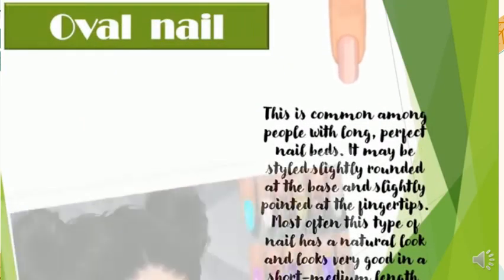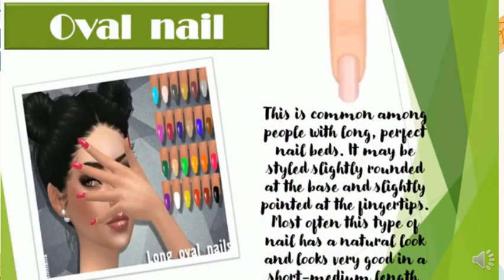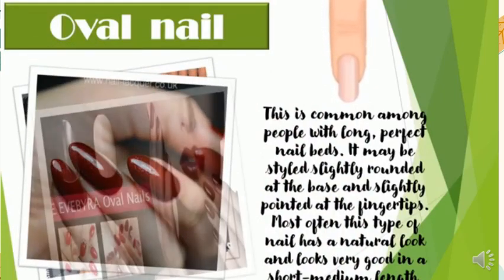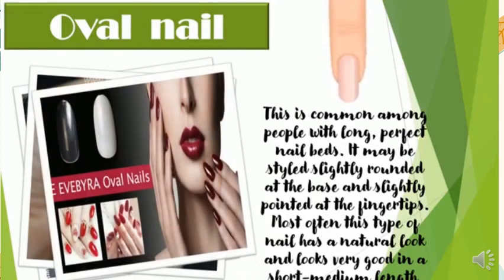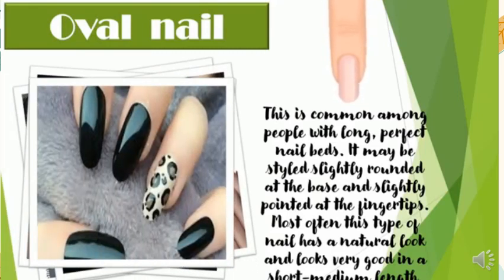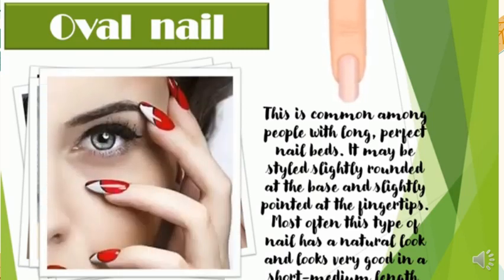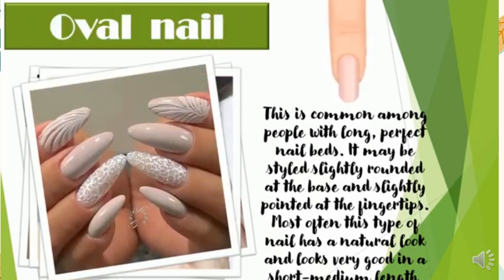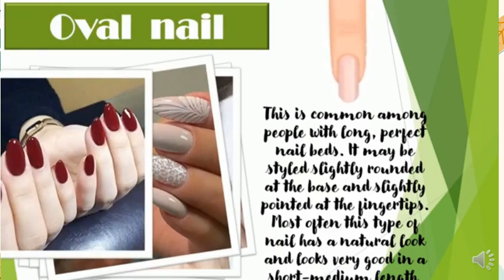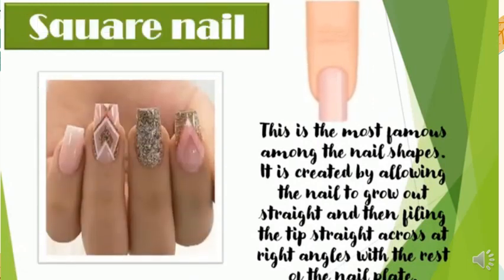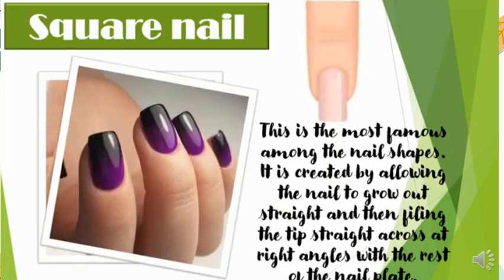Oval nail — this is common among people with long, perfect nail beds. It may be styled slightly rounded at the base and slightly pointed at the fingertips. Most often this type of nail has a natural look and looks very good at short to medium length.